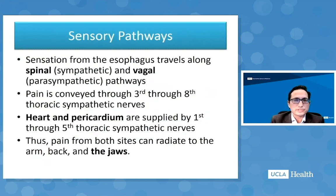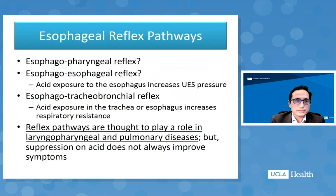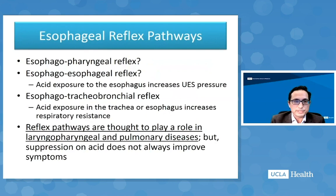Sensation from the esophagus travels along spinal and vagal pathways. Pain is conveyed through the third through eighth thoracic sympathetic nerves. The heart and pericardium are supplied by the first through fifth thoracic sympathetic nerves. This is important in otolaryngology because pain from both the heart and the esophagus can radiate to the arm, back, and jaws. There is also an esophagopharyngeal reflex, an esophagosophageal reflex where acid exposure increases upper esophageal sphincter pressure, and an esophagotracheobronchial reflex where acid exposure increases respiratory resistance — all thought to play a role in laryngopharyngeal and pulmonary diseases.